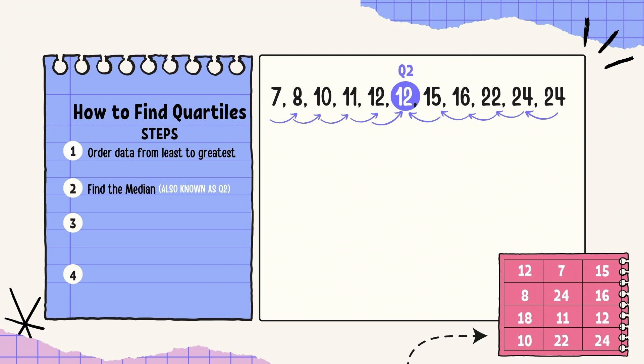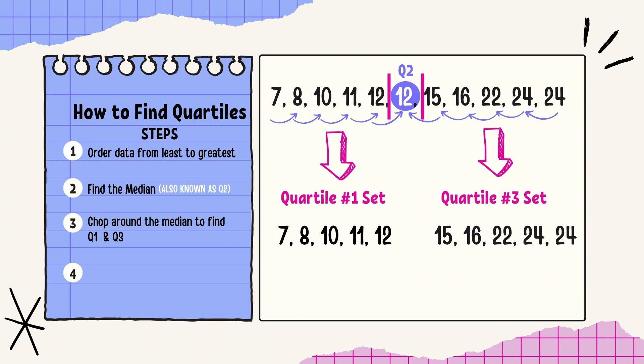Now step 2, I'm going to find the median, also known as quartile 2 or Q2. So I'm just finding the median of that set, which is 12. From here, I'm going to chop around the median to find my quartile 1 and quartile 3. I'm not going to include that median of 12, I'm cutting around it. So my quartile 1 set is 7, 8, 10, 11, 12. And my quartile 3 set is 15, 16, 22, 24, and 24.